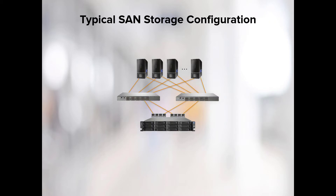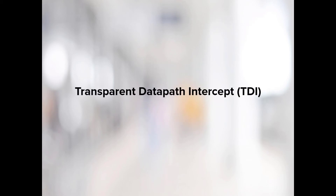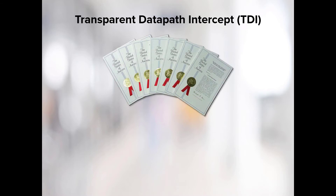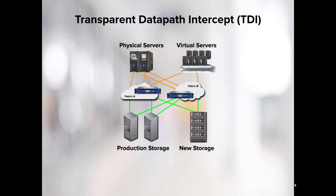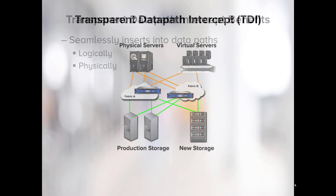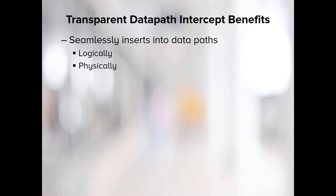The method by which DMS is placed into the data path is called insertion. CDS's transparent data path intercept is a patented technology which eliminates all the pain points associated with deploying an in-band appliance to a live fiber channel SAN. Although this video pertains to insertion as it relates to DMS, the benefits of transparent data path intercept, or TDI, are many. It allows seamless insertion into the data paths of selected host LUNs logically, without touching production cables, or physically, by plugging directly into the downstream or upstream fiber channel links. It also allows all I/O to be inspected and/or processed.